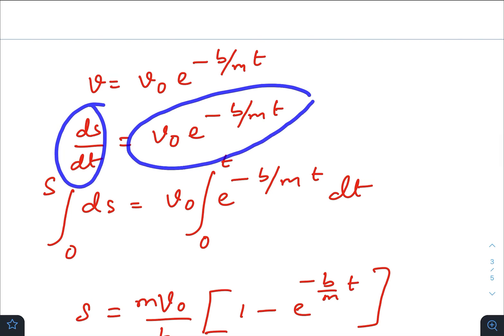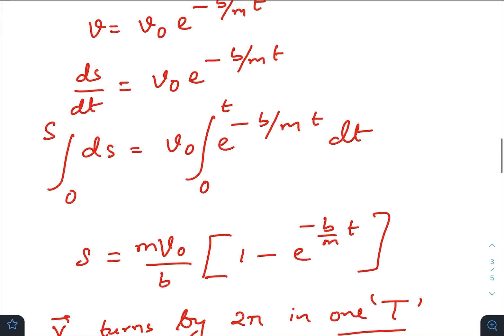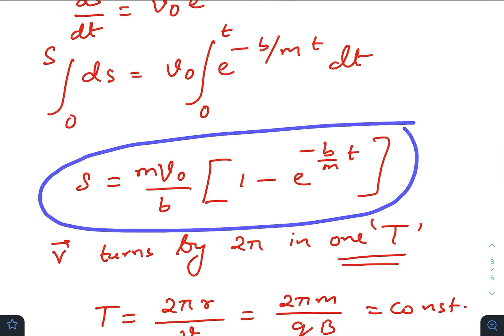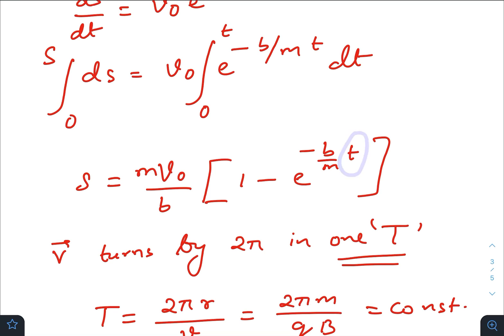Now ds/dt equals to this one, that is the distance travelled. So integrating again from 0 to t for a distance s, we get the expression of distance looking like this. Now we just need to know the time after which the velocity vector will turn by 2π radians. Of course the velocity vector will turn by 2π radians in one time period.